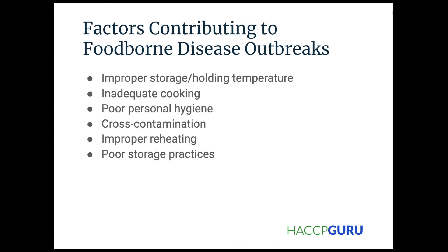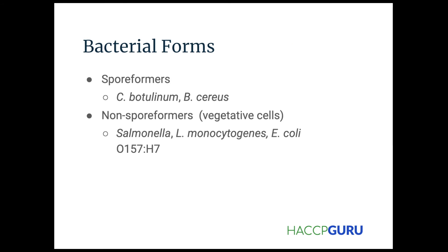Factors contributing to foodborne illness outbreaks include temperature control — making sure products are stored at proper temperatures, not left unrefrigerated in the warehouse, and that refrigerated transport trucks are functioning. That was a big lesson from logistics. Other factors include inadequate cooking, poor personal hygiene, cross-contamination, and improper reheating.